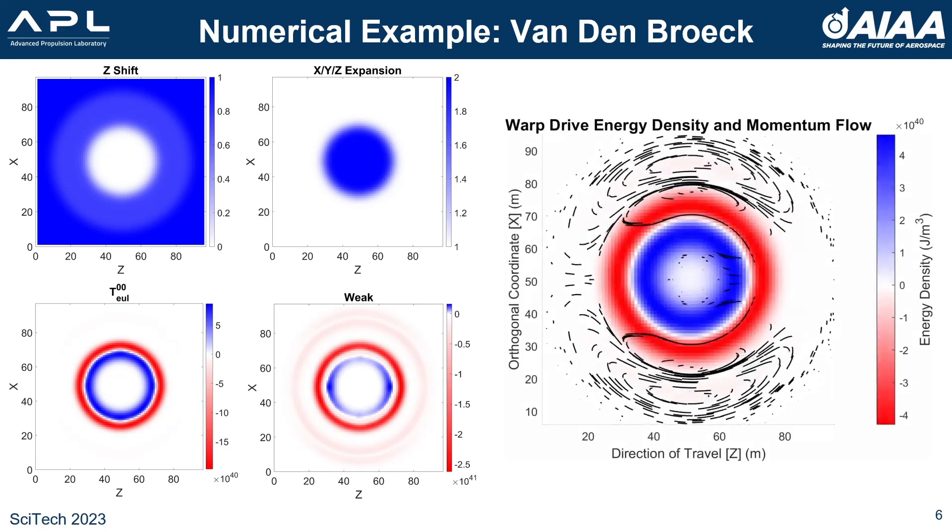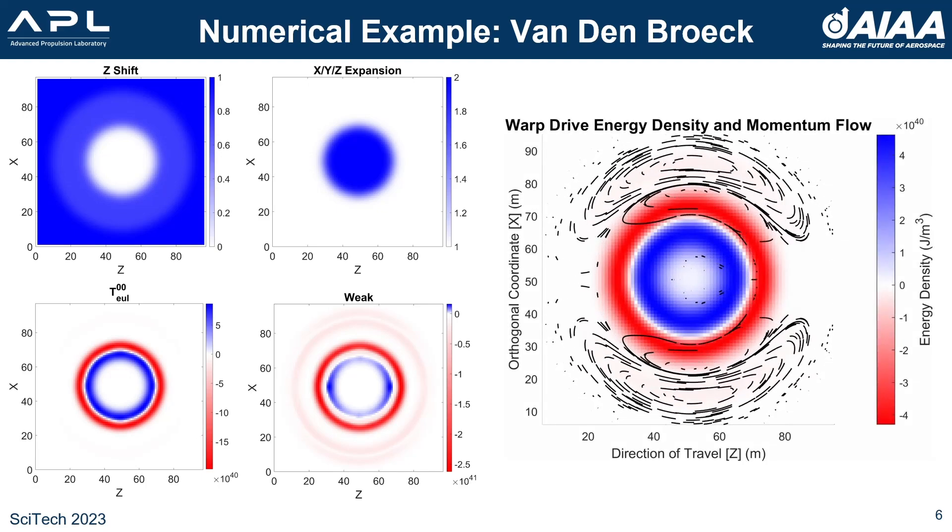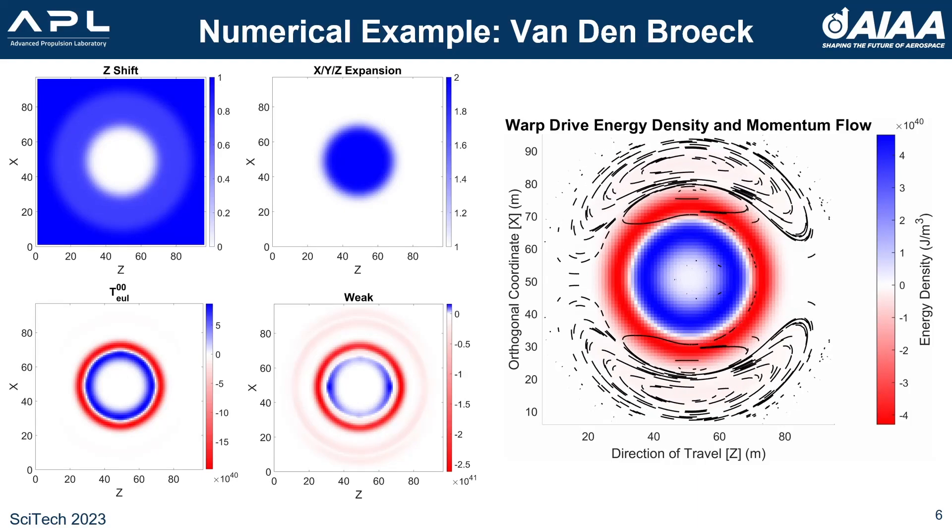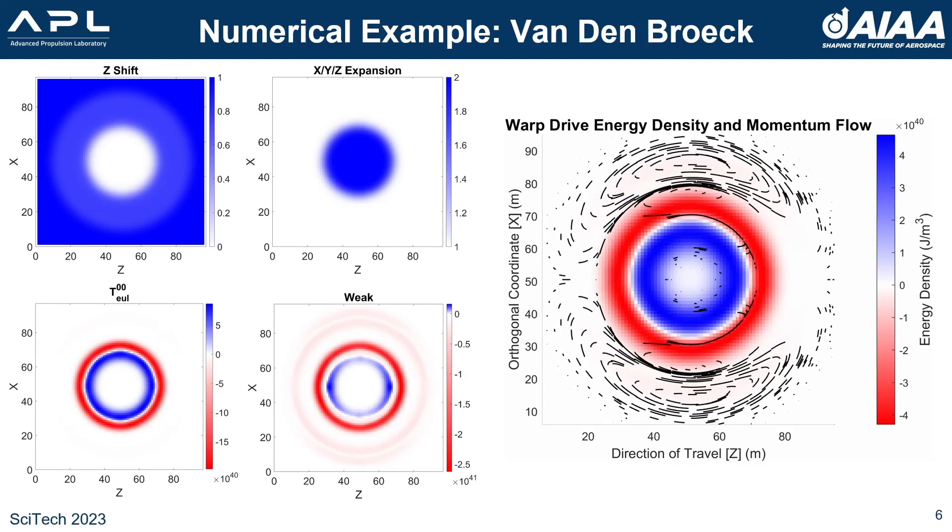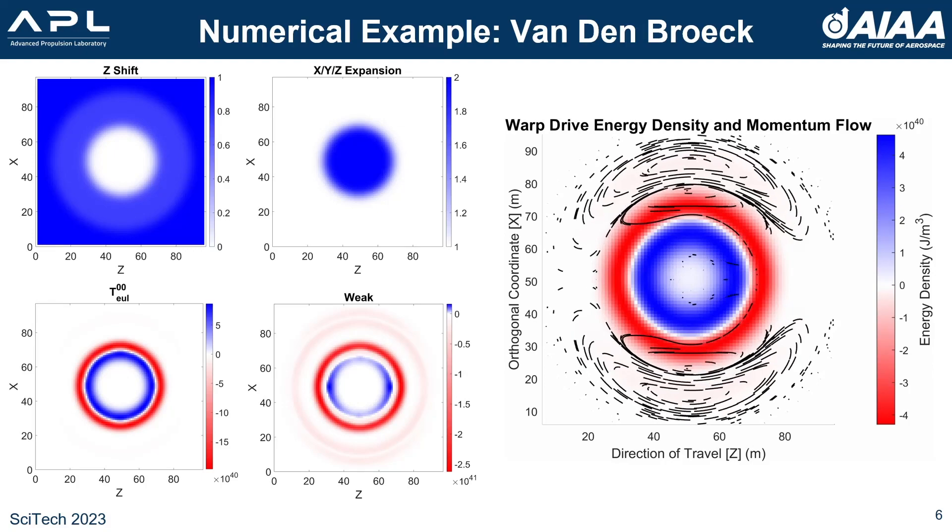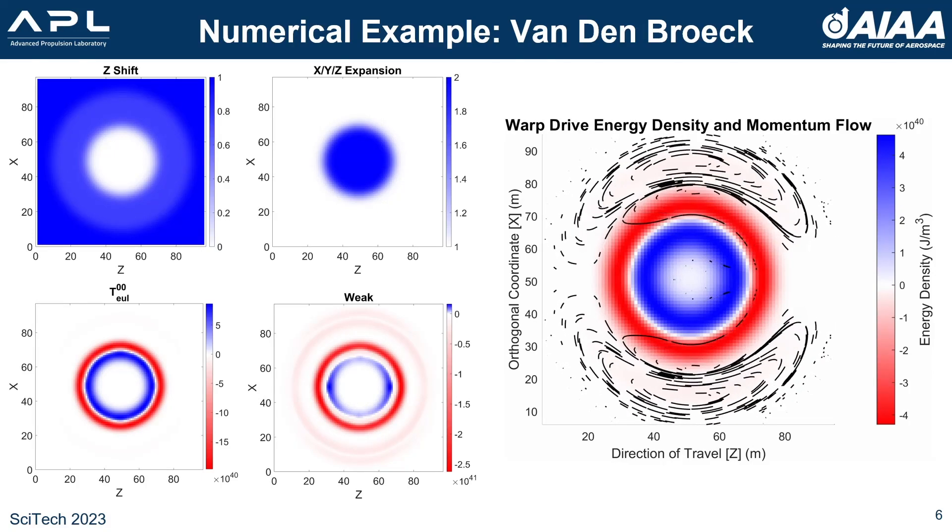These added regions cause a more complicated momentum flow structure. The outer momentum flow exhibits a circulation similar to Alcubierre, and closer to the passenger volume, another opposite flow occurs around the expansion region.